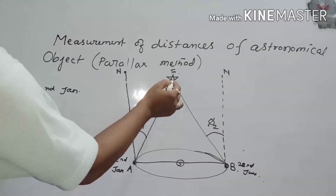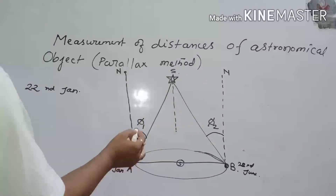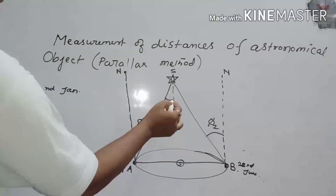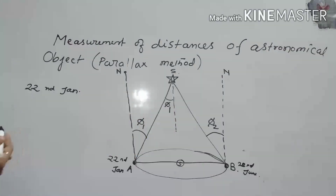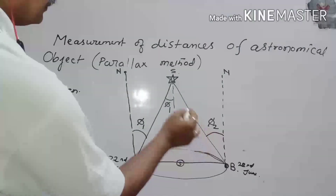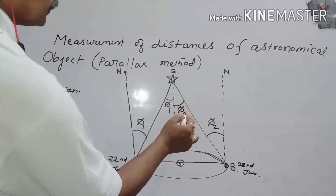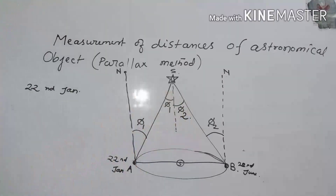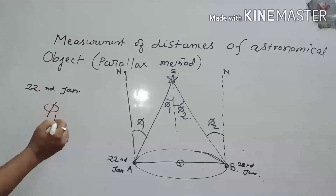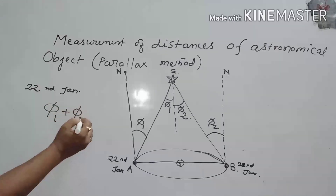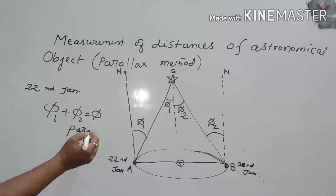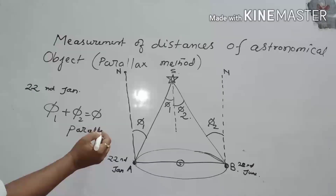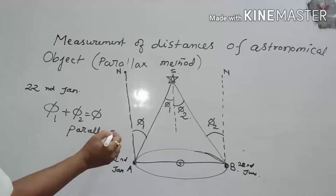If we draw a line here, then this phi 1 angle equals the other phi 1 angle — alternate interior angles. And this phi 2 angle equals the other phi 2 angle — alternate interior angles. So phi 1 plus phi 2 equals phi. This total angle phi is called the parallax angle.